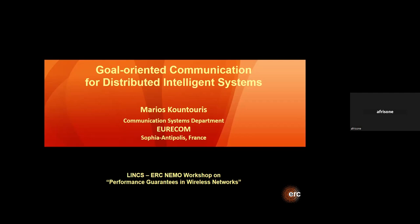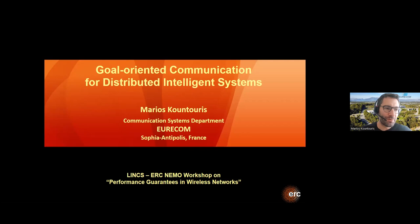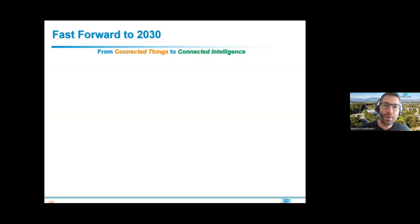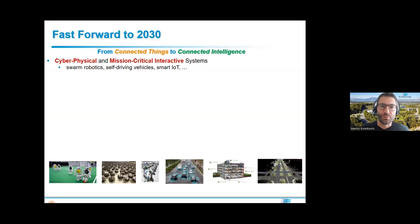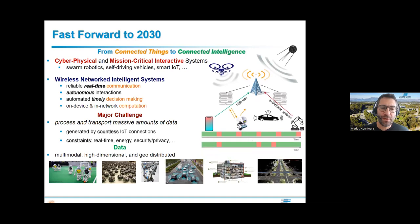Today I'm going to talk about a topic I've been spending a lot of time on in recent years: goal-oriented semantic communication. I'll try to give you my vision and some first results. Before going into what we can do with this topic, let's fast-forward about 10 years and see what wireless networks will have to do. Basically, they'll need to cater to cyber-physical or autonomous interactive systems, probably with some mission criticality — think swarm robotics, self-driving cars, smart IoT.